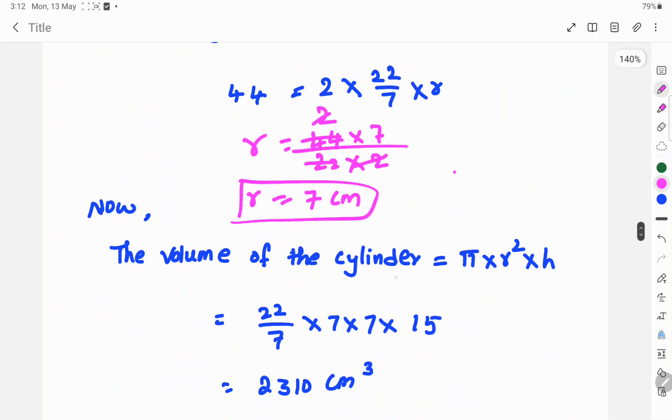Now, the volume of the cylinder equals πr²h. So that's 22/7 times r squared. The radius is 7, so r squared is 7 times 7, and the height is 15.